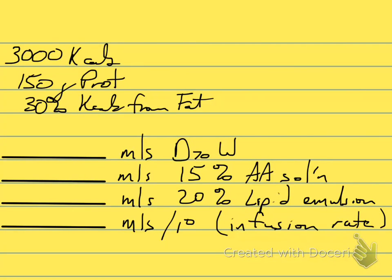I wanted to go through how to calculate a TPN prescription when you're given calorie and protein needs and you determine the percent of calories coming from fat. In this example, we've estimated the calorie needs for this patient to be 3,000 calories and 150 grams of protein, and we've decided about 30% of the calories are going to come from fat.